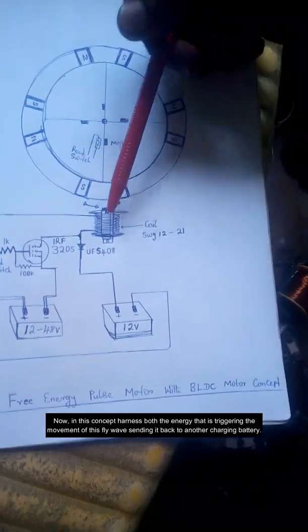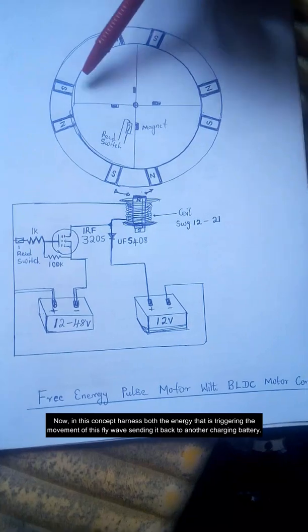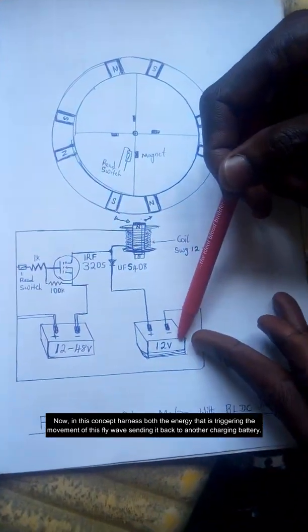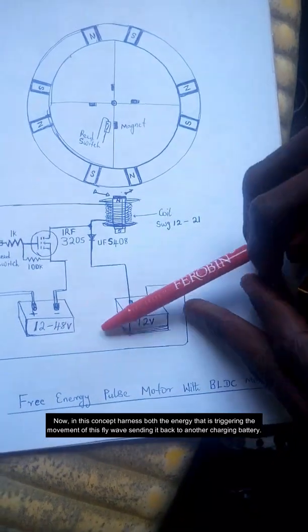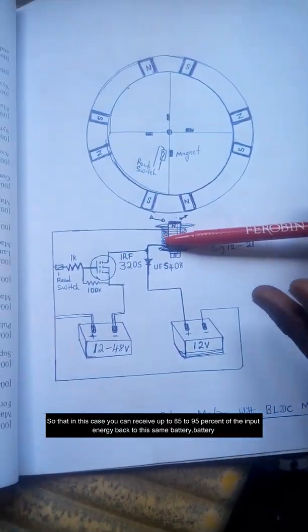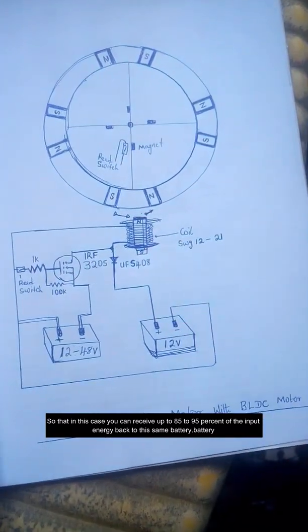Sending it back to another charging battery, so that in this case you can receive up to 85 to 95 percent of the input energy back to this same battery. If you look at the setup, you see that from the arrow when the starter coil is triggered.